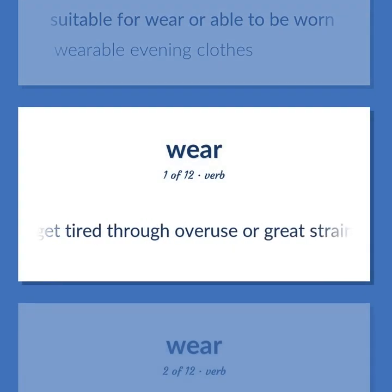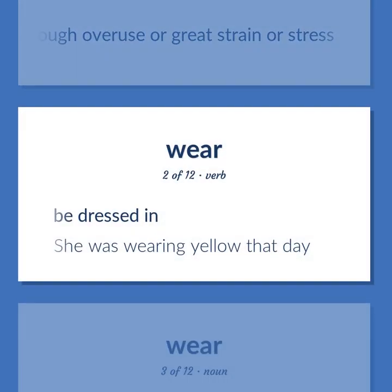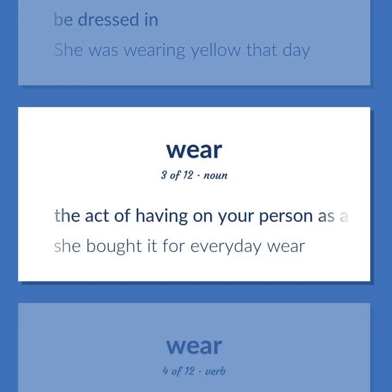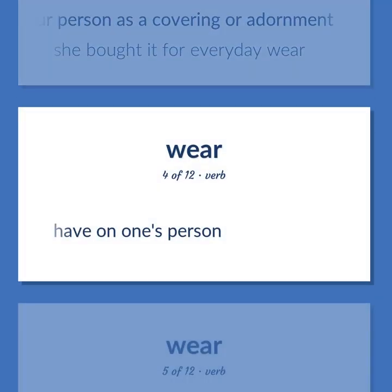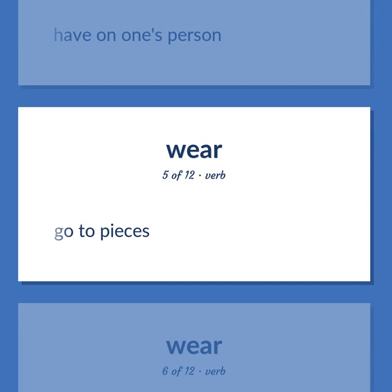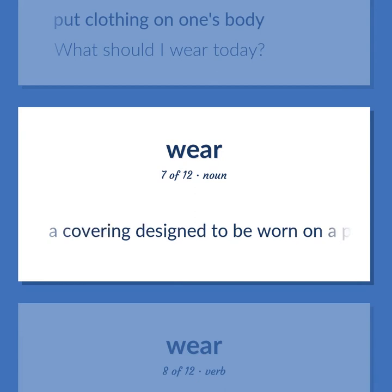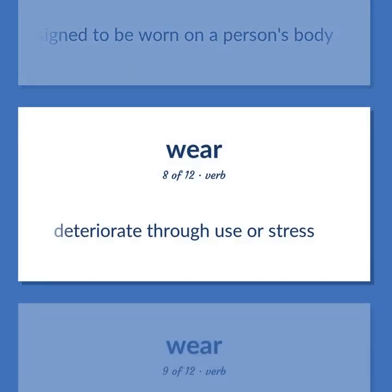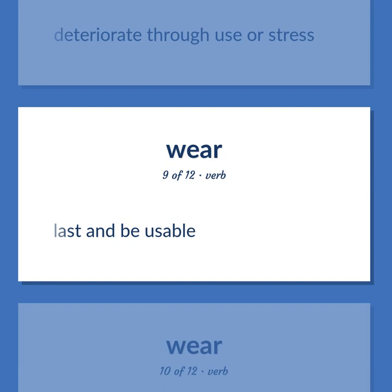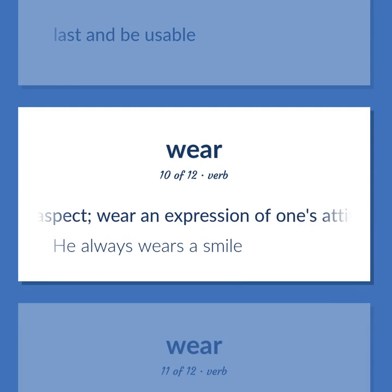Exhaust or get tired through overuse or great strain or stress. Be dressed in — she was wearing yellow that day. The act of having on your person as a covering or adornment — she bought it for everyday wear. Have on one's person. Go to pieces. Put clothing on one's body — what should I wear today? A covering designed to be worn on a person's body. Deteriorate through use or stress. Last and be usable. Have in one's aspect; wear an expression of one's attitude or personality. He always wears a smile.